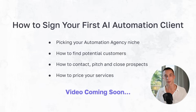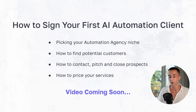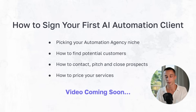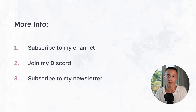That's the entire servicing process that myself and my team typically use. What you're probably looking to know next is how to sign your first AI automation client, which is a video coming very soon. I'm going to be showing you: how to pick your AI automation agency niche, how to find potential customers within that niche, how to contact, pitch, and close those prospects, and how to price your services at a fair rate. If you're looking for more information on AI automation agencies, be sure to subscribe to the channel, join my community Discord in the description, and subscribe to my AI newsletter called The Drip, which shares the hottest news in AI and tips on AI automation. That's all for the video — thank you so much for watching and I'll see you in the next one.